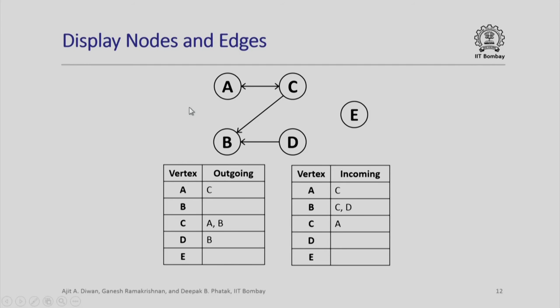Therefore, we are able to write a display portion of a program which would be able to display, for example, vertices and all outgoing edges. If you look at this graph, A to C there is an outgoing edge, there is no outgoing edge from B, there is an outgoing edge from C to A and B, there is no outgoing edge from E.